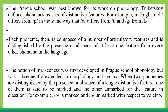The Prague School was best known for its work on phonology. For example, Trubetzkoy defined phonemes as a set of distinctive features. In English, 'b' differs from 'p' in the same way that 'd' differs from 't' and 'g' from 'k' — these sounds differ in terms of voicing. Each phoneme is composed of a number of articulatory features and is distinguished by the presence or absence of at least one feature from every other phoneme in the language.